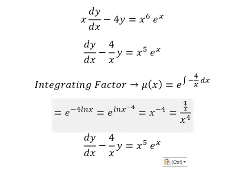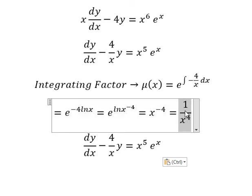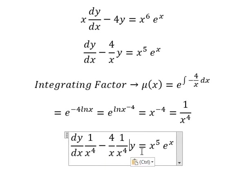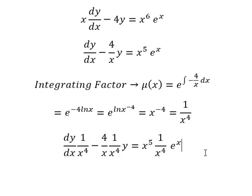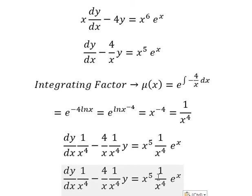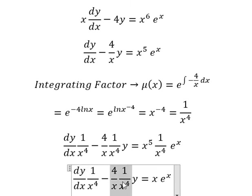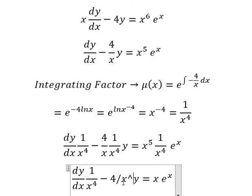That means we multiply both sides by 1 over x to the power of 4. This gives us x, and on this side we have 4 over x to the power of 5.